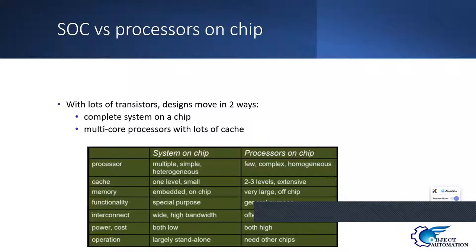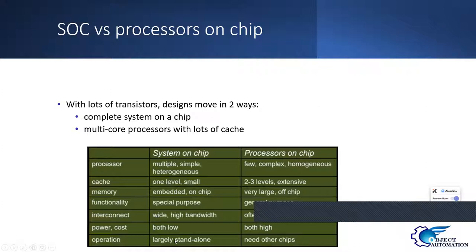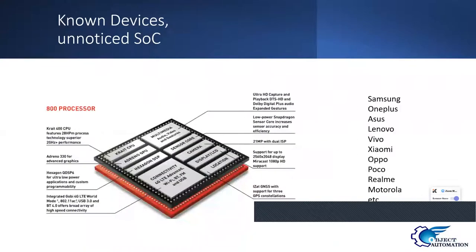Cache is much faster even than RAM. An SoC is an embedded chip meant for embedded or robotic work — make a drone, build any kind of electronic circuit — it's a limited, special purpose. A processor is general purpose; you can do almost everything from a laptop or desktop processor. The SoC generally works standalone with memory built inside it, while a processor requires external RAM and storage to run.